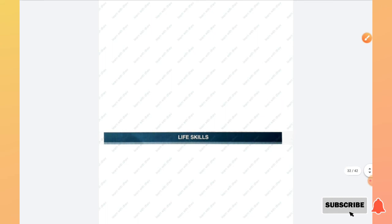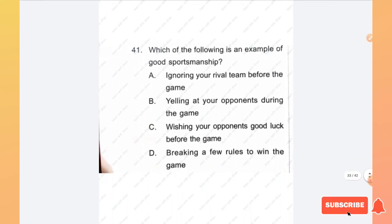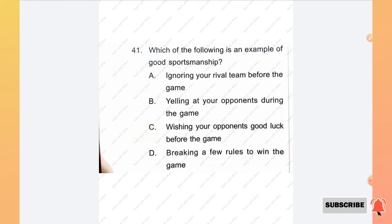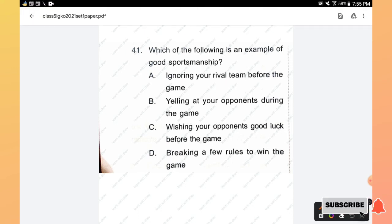The next section is Life Skills. Question number 41: Which of the following is an example of good sportsmanship? Ignoring your rival team before the game, yelling at your opponents during the game, wishing your opponents good luck before the game, breaking a few rules to win the game. The right answer is option C, wishing your opponents good luck before the game.